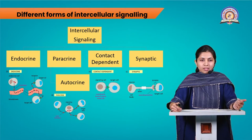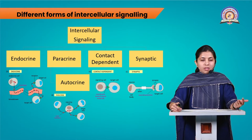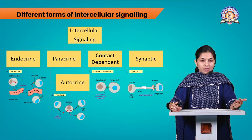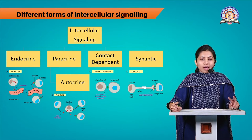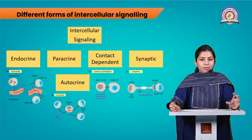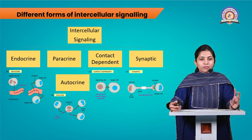There are different forms of intracellular signaling. Endocrine signaling depends on endocrine cells that secrete hormones, which bind to receptors in target cells. Paracrine signaling uses a local mediator that regulates the response in neighboring cells. Contact-dependent signaling requires direct contact between the signaling cell and the target cell. Synaptic signaling occurs in neuronal cells, where the end of a neuron is in direct contact with the target cell at a synapse. These are the four types of signaling mechanisms.